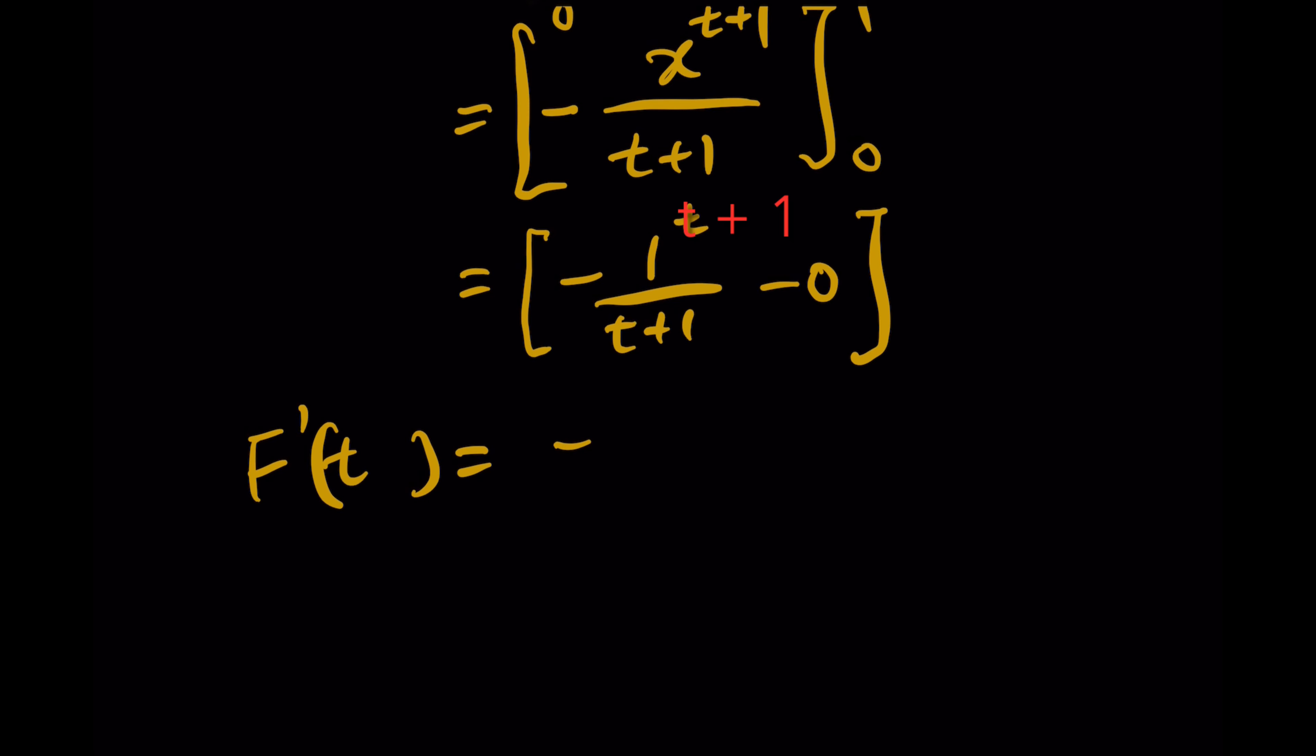Let's integrate both sides. So to get F(t), we need to integrate negative 1 over (t+1) with respect to dt.